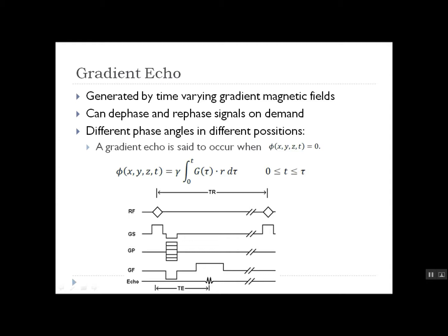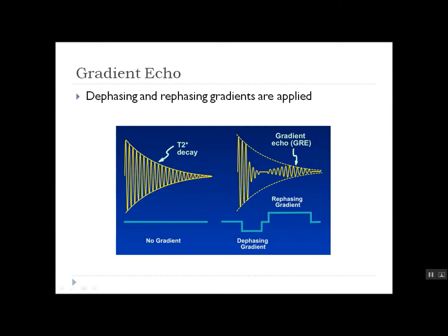The T2 and T2-star decays are not affected by this situation. In the image below, we can see a pulse sequence for generating a gradient echo, where TR is the recovery time, TE is the time of echo, and GS, GP, and GF are gradients. On the left-hand side we can see a free induction decay where no gradient is applied, and on the right-hand side we can see a generated gradient echo caused by the application of a dephasing gradient and a rephasing gradient in this order.